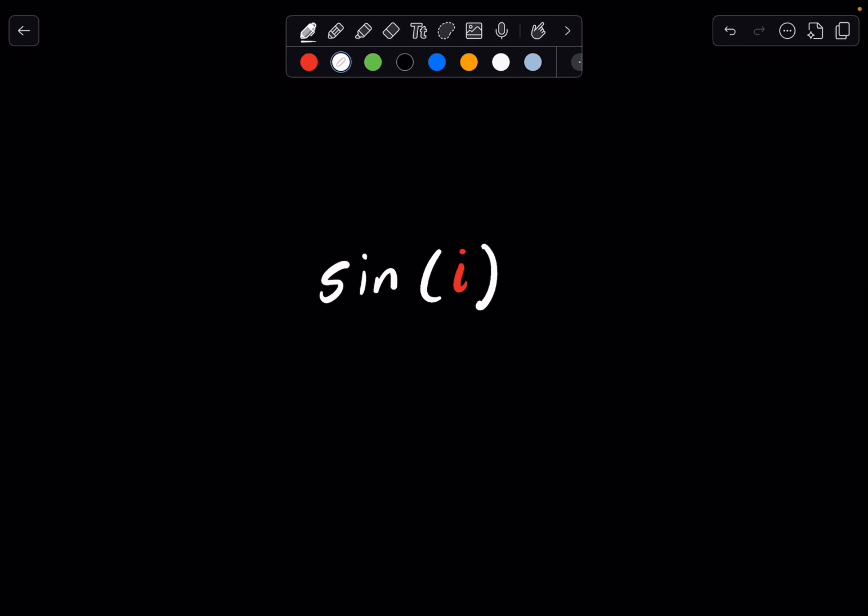Okay, so the problem is as such. We have sine of i, and in this case, i is the square root of negative 1. It is that imaginary number we've been working with for some time now. So let's jump right into the solution.